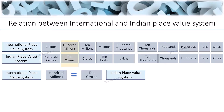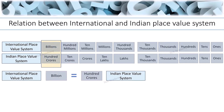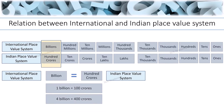The ten millions position in the international place value system is equal to the crores position in the Indian place value system — that means 10,000,000 equals 1 crore, and 30,000,000 equals 3 crores. The billions position in the international system is equal to the 100 crores position in the Indian system — that means 1 billion equals 100 crores, and 4 billion equals 400 crores.